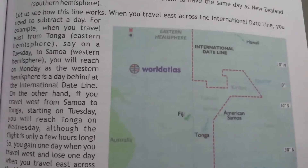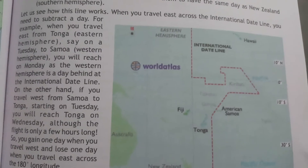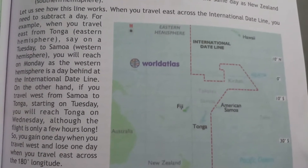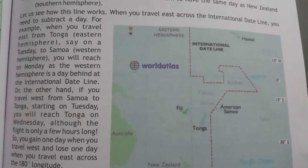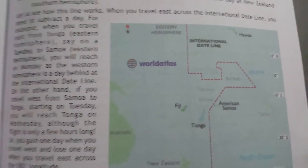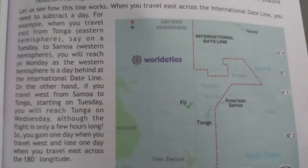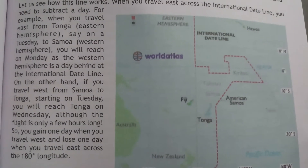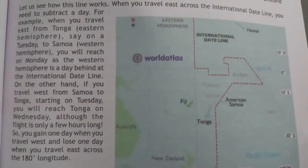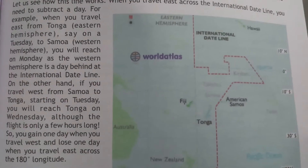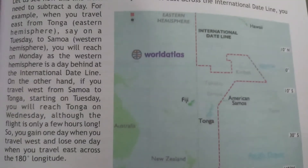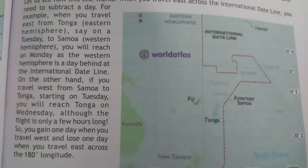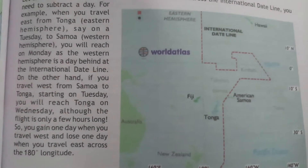Let us see how this line works. When you travel East across the International Date Line, you need to subtract a day. For example, when you travel East from Tonga on a Tuesday to Samoa, you will reach on Monday, as the Western Hemisphere is a day behind at the International Date Line.